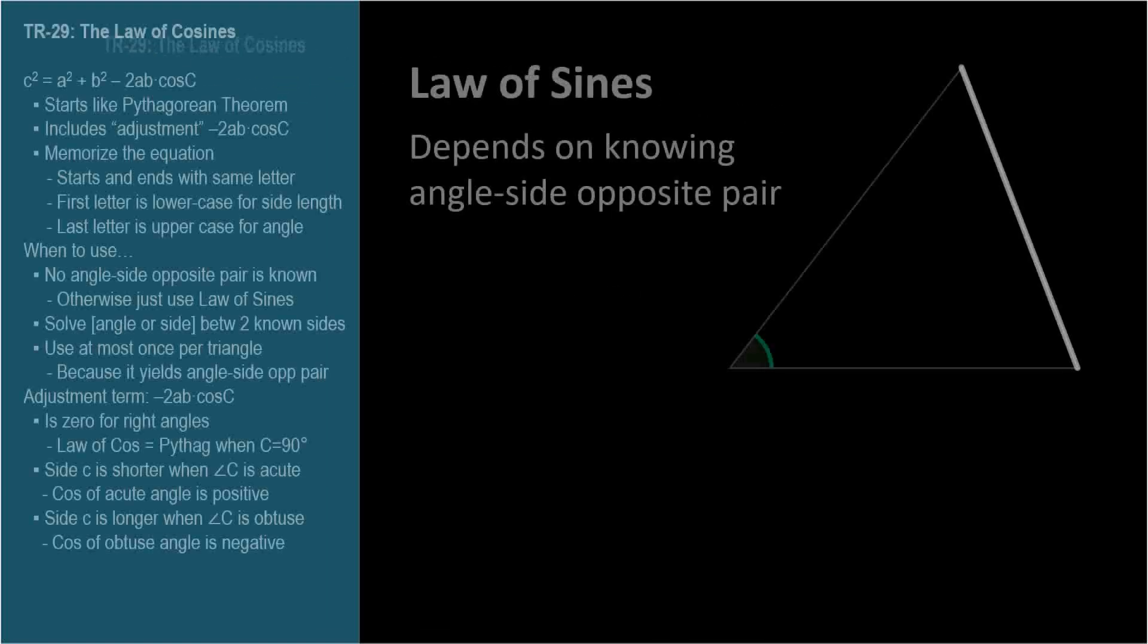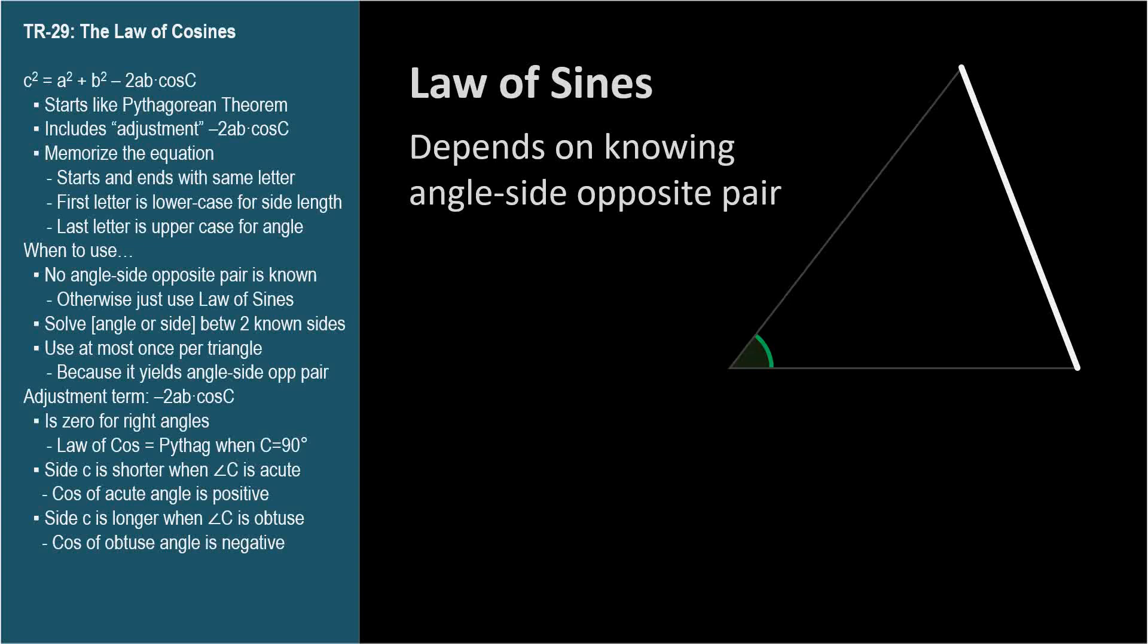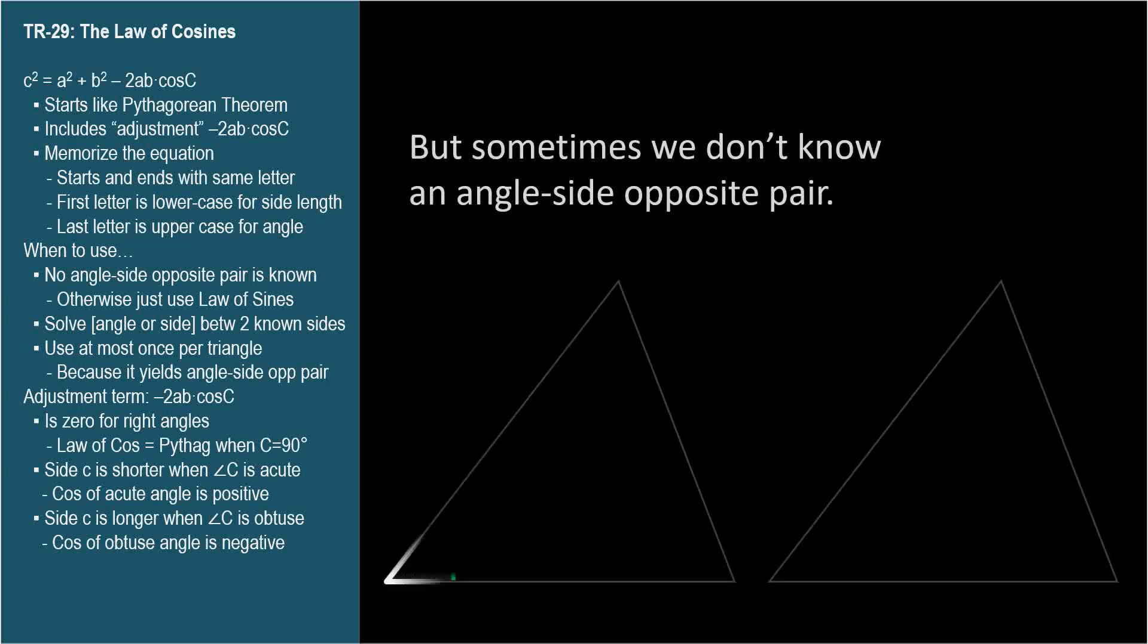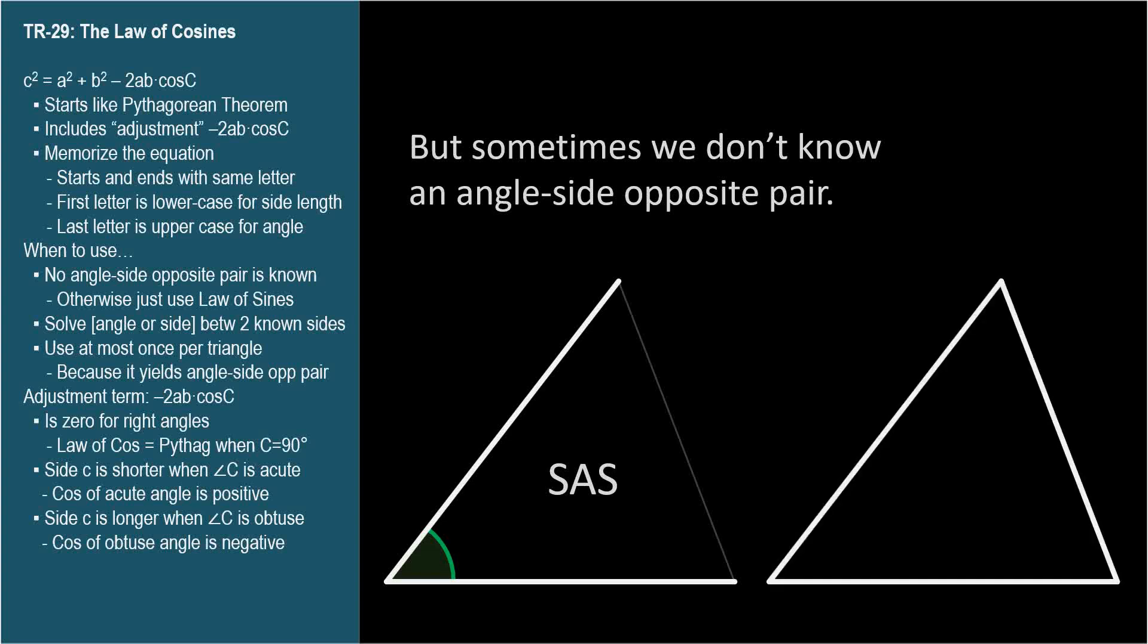The Law of Sines can help us solve several triangle configurations, but only when we're given or can figure out an angle-side opposite pair. But sometimes we don't know an angle-side opposite pair. This is the case for SAS and SSS triangles.